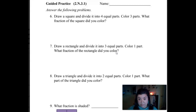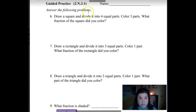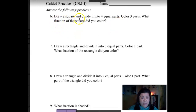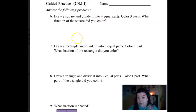Here's some word problems. I'm going to read these to you, but you do need to get used to reading these by yourself. You need to make sure you can recognize words like 'draw,' 'square,' 'equal parts,' that sort of thing. So let's read this: draw a square and divide it into four equal parts. Color three parts. What fraction of the square did you color?